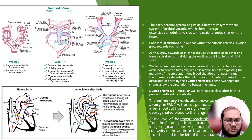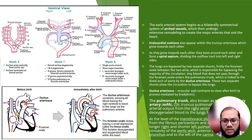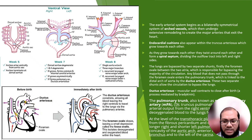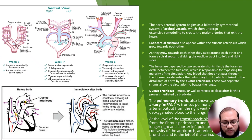The ductus arteriosus is a muscular wall which contracts to close after birth, a process which is mediated by bradykinin. The pulmonary artery trunk, also known as the main pulmonary artery or truncus pulmonalis, is a solitary arterial output from the right ventricle, transporting deoxygenated blood to the lungs for oxygenation. At the level of the transthoracic plane, the trunk emerges from the fibrous pericardium and divides into a longer right pulmonary artery and a shorter left pulmonary artery, in the concavity of the aortic arch, anterior to the left main bronchus and to the left of the carina.